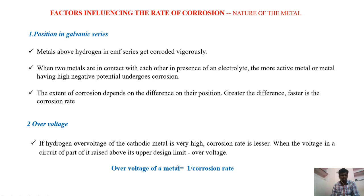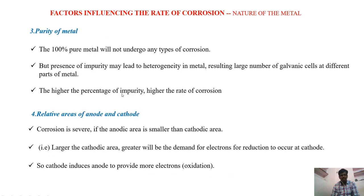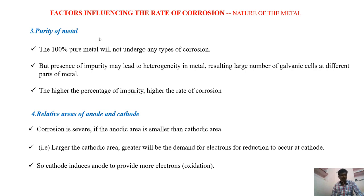Next is over-voltage. The over-voltage of the metal is inversely proportional to the corrosion rate. Next one is the purity of the metal. A 100% pure metal will not be corroded, but the achievement of 100% pure metal is highly impossible. So the presence of even a little amount of impurity may lead to formation of a series of galvanic cells on the surface of the metal, and the metal will be corroded very quickly. Higher the percentage of impurity, greater will be the corrosion rate.